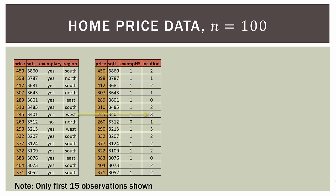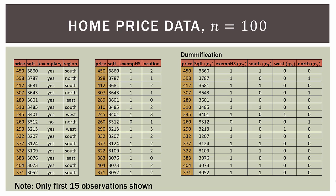So up to this point we've gone from text entries to numerical entries, but we have not created our dummy variables yet. Here we have what I call dumbification. The price column is the same, the square footage column is the same, the exemplary high school column is the same. But now we have three dummy variables: south, west, and north. You might be saying — wait, we have four locations: north, south, east, and west, but we only have three dummy variables. If you remember from part four, our number of dummy variables is always the number of categories minus one. So four categories minus one is three dummy variables.